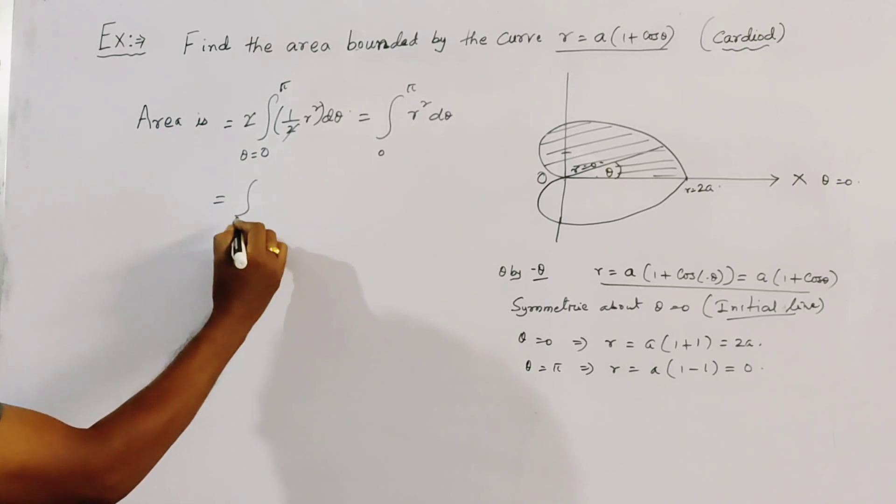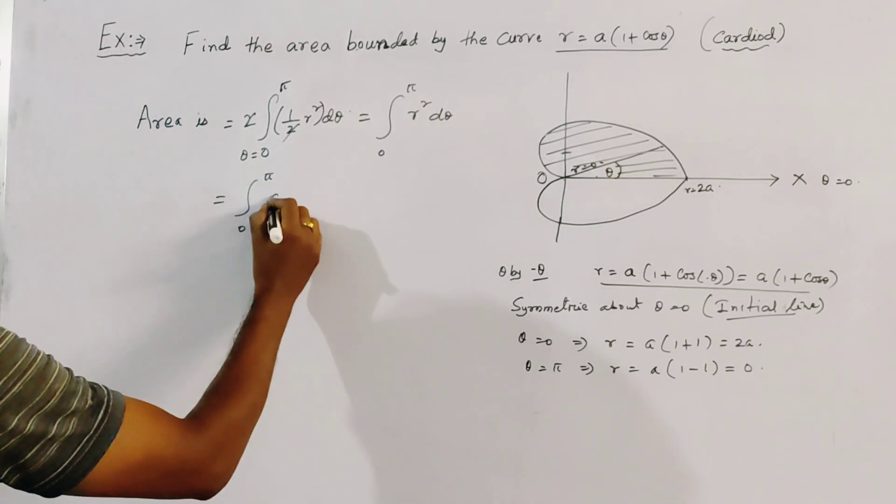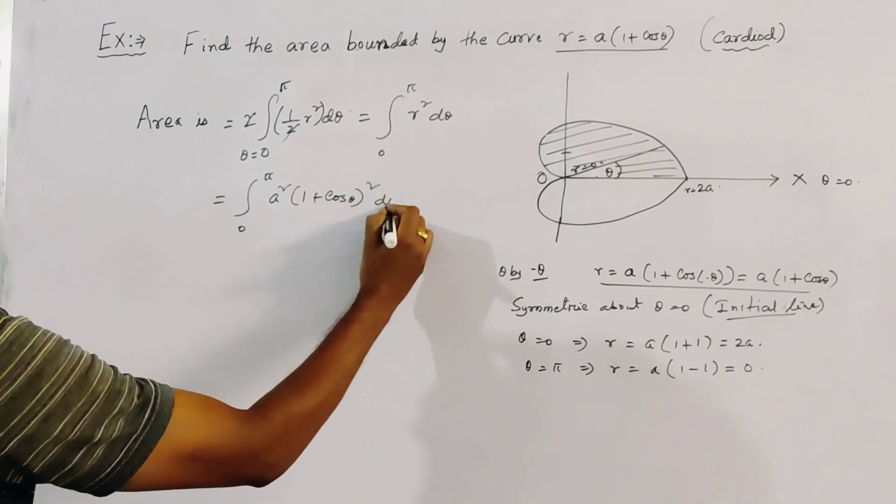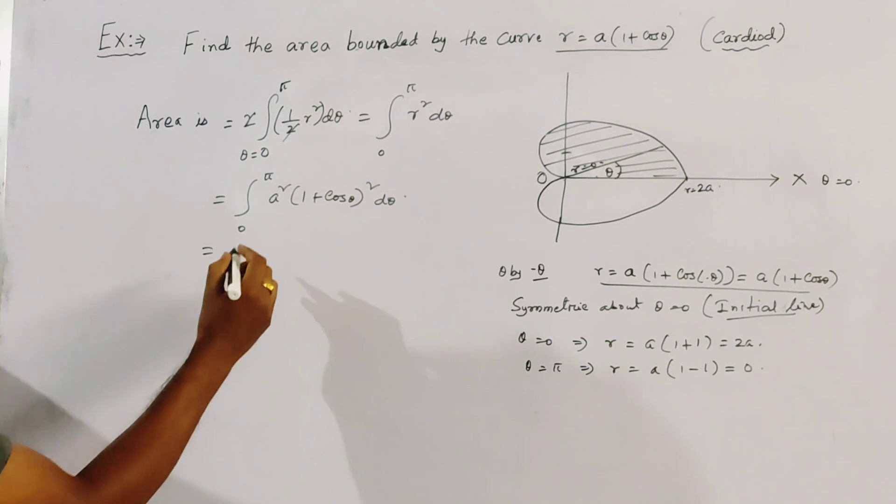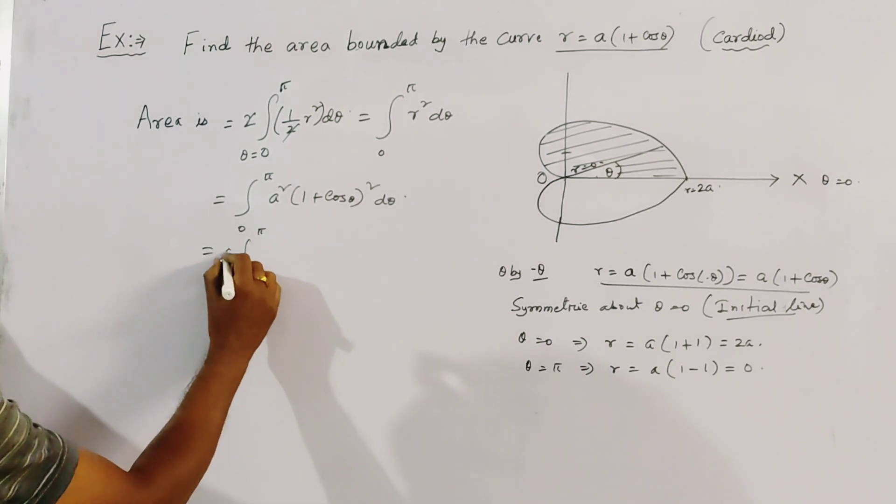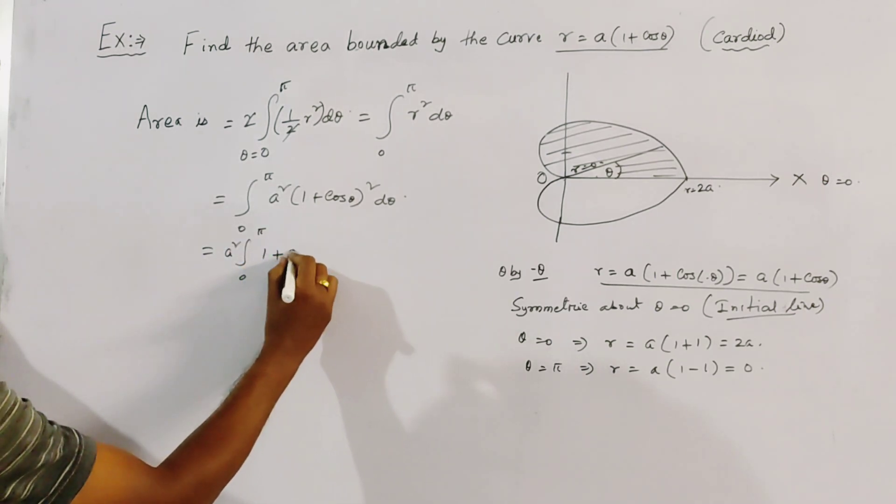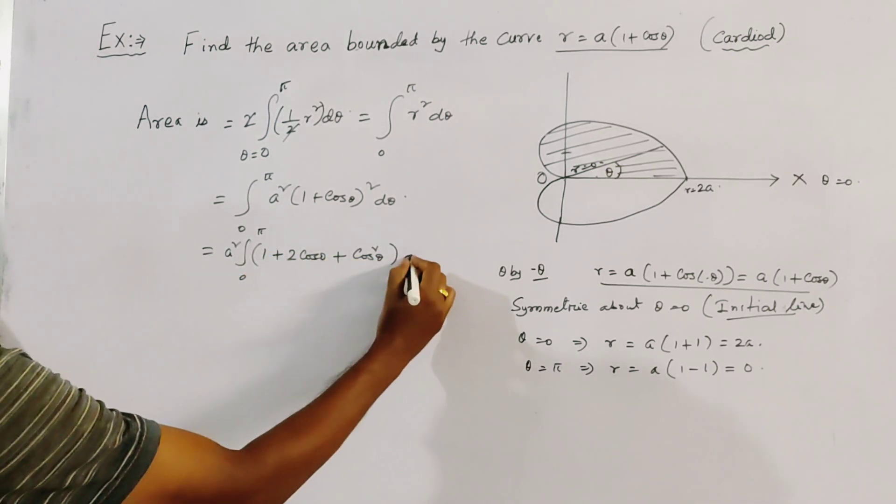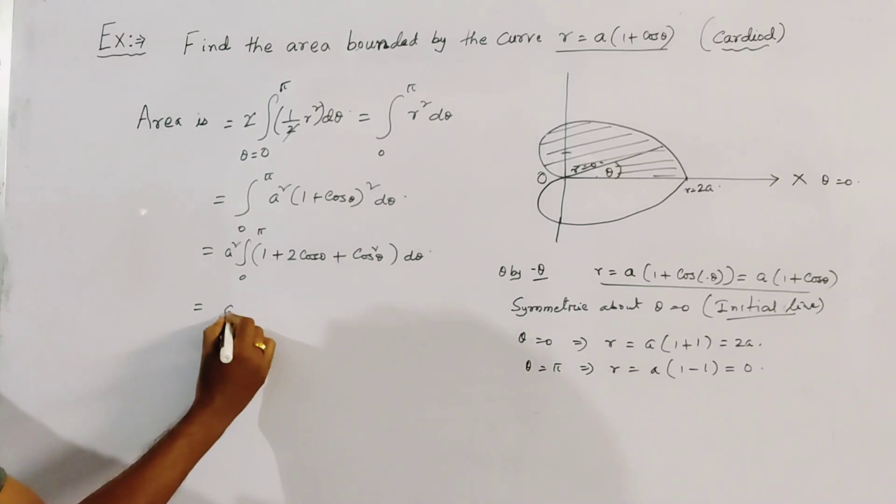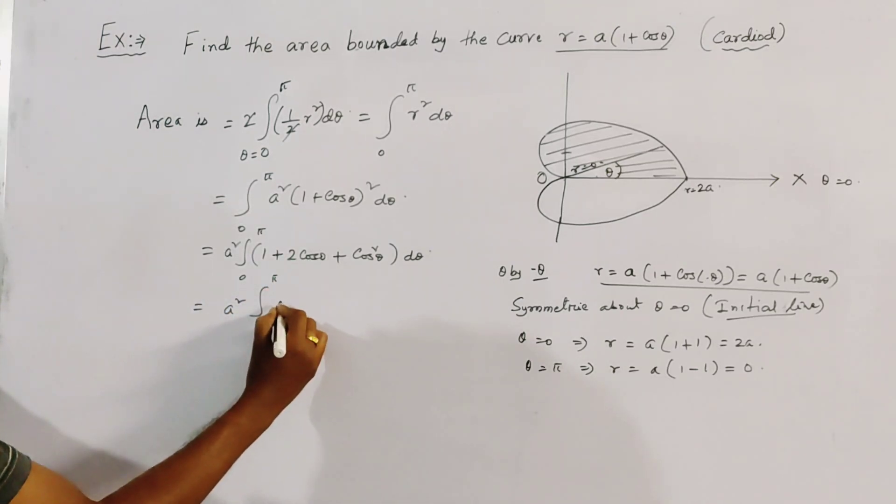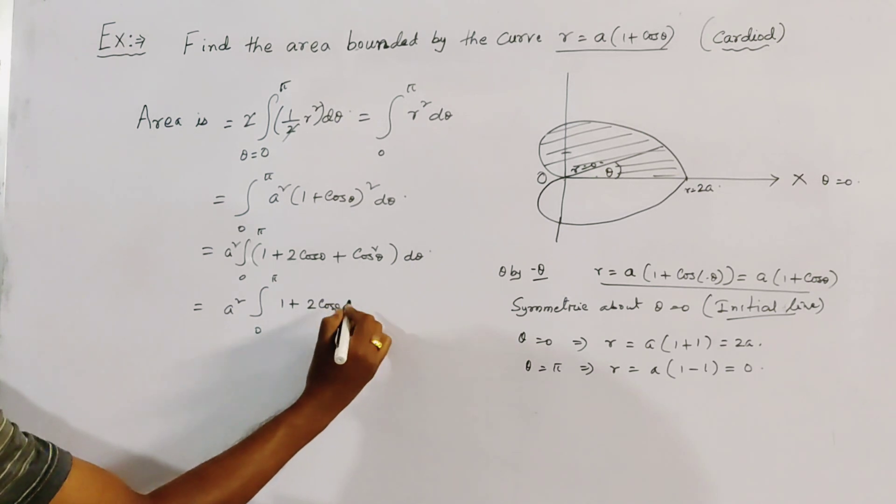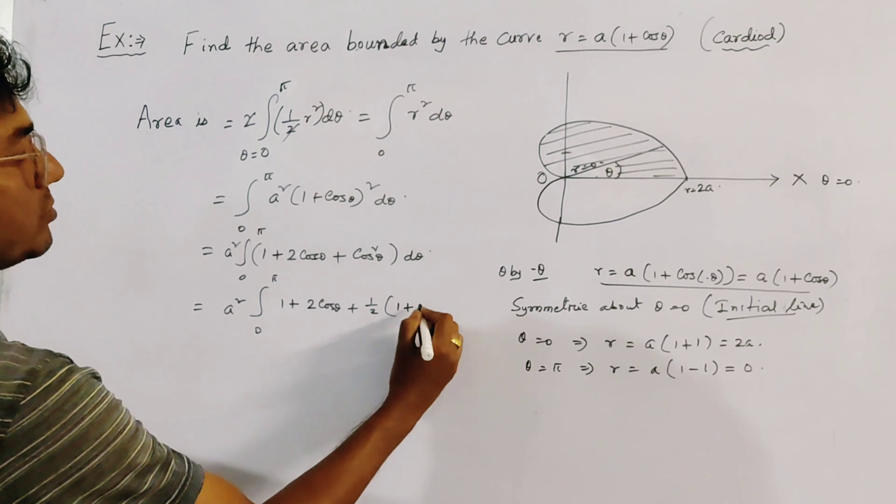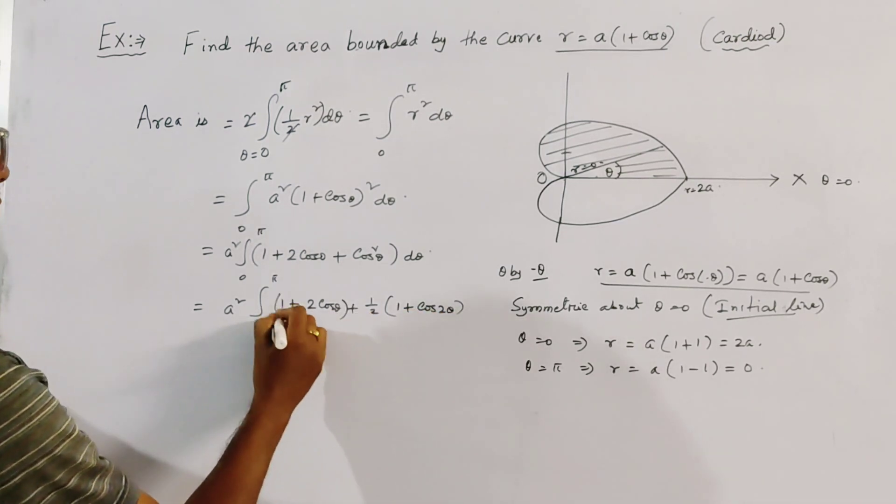Now put the value of R, that is A squared into 1 plus cos theta whole squared d theta. This gives integration 0 to pi, 1 plus 2 cos theta plus half into cos squared theta, which means 1 plus cos 2 theta.